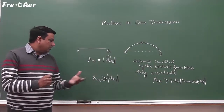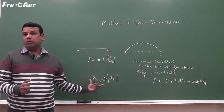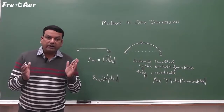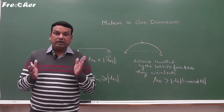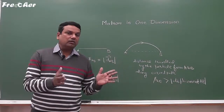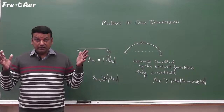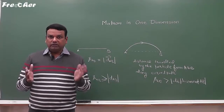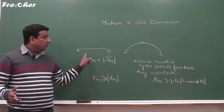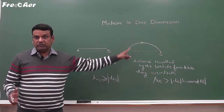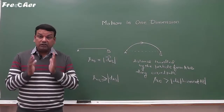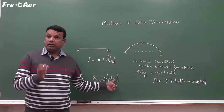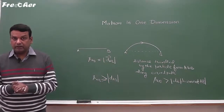If we divide these two quantities by the time interval taken in the motion, we can get the rate of change of distance or the rate of change of displacement. In complete motion, if over a greater time interval we are finding the rate, then it is called the average value. So, if we divide by the total time interval, we get average speed when distance is divided by time interval, and we get average velocity when displacement is divided by time interval.